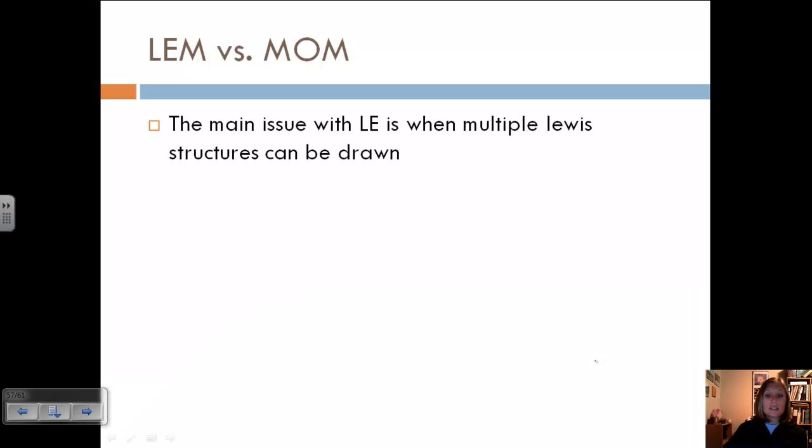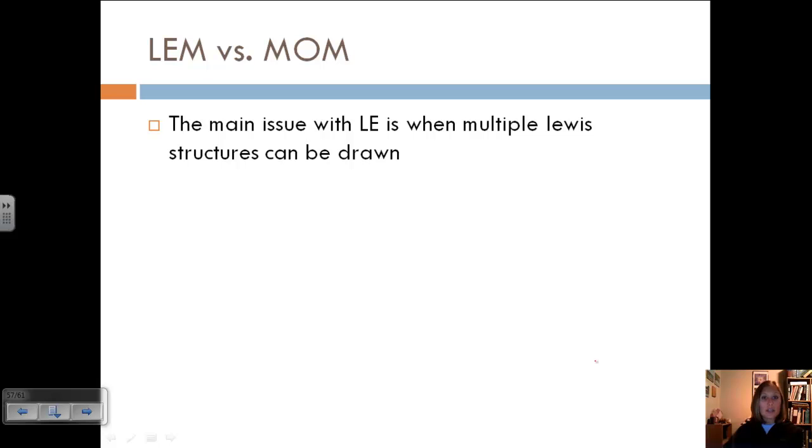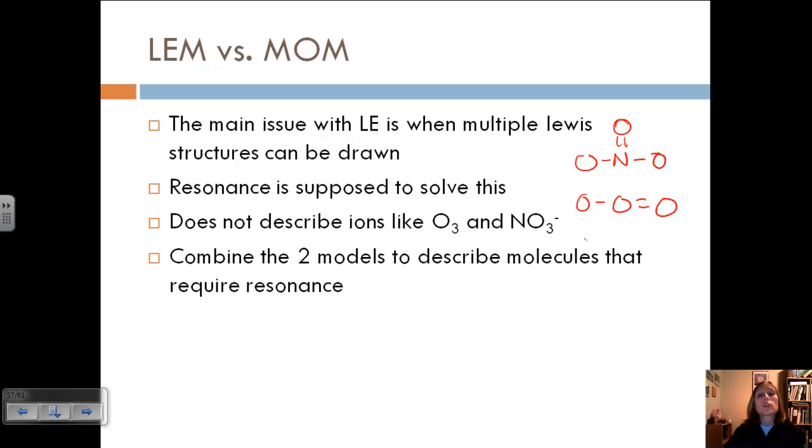So let's combine the localized electron model and the molecular orbital models. The main issue with the localized electron model is when multiple Lewis structures can be drawn. Localized electron model says that electrons are localized, that they stay in a particular atom. And we know with resonance, or multiple bonds, that those electrons actually fluctuate in between different bonds. And so that goes against the localized electron model. And so resonance was kind of supposed to solve this problem for us. But this does not describe ions like O3 and NO3. And so both of those have a double bond that can't be described using that method.